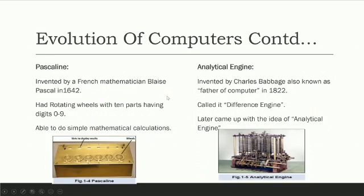Next a French mathematician Pascaline invented another machine in 1642. It had rotation wheels and the calculation was done through these rotation wheels. Each wheel had divided into 10 parts with digits 0 to 9. And after the rotation of one wheel, second wheel moved through one digit. That's how mathematical calculation was done.